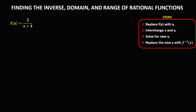For the next given function, first we find the domain. Since there is a variable in the denominator, we equate the denominator to 0. So x plus 4 equals 0, and solving for x gives x equals negative 4. Therefore, if x equals negative 4, this denominator becomes 0.